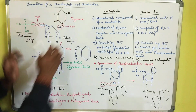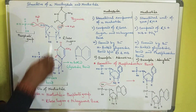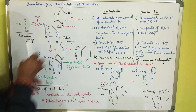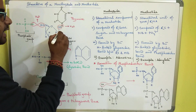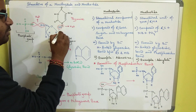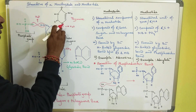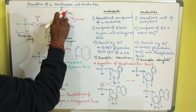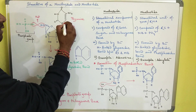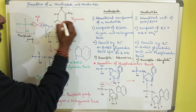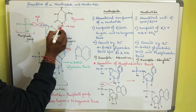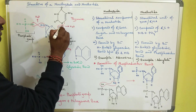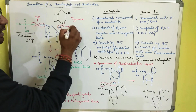First, this is the ribose sugar — it has the one prime carbon, and with this one prime carbon one hydroxyl group is attached. In the nitrogenous base, there is the number one nitrogen which has a hydrogen group. So this hydrogen and this hydroxyl group react with each other.